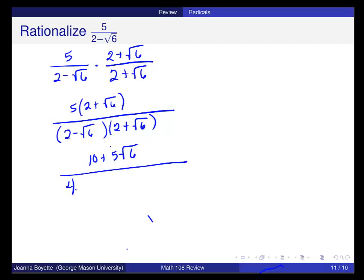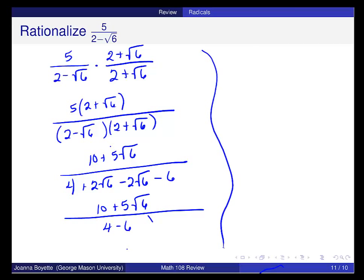When you FOIL, the first term is four. The outer term is two square roots of six, and the inner term, those outer and inner terms will cancel. This is the square root of six times the square root of six, which is just six. So you should get a real number in the denominator if you have chosen the right conjugate.